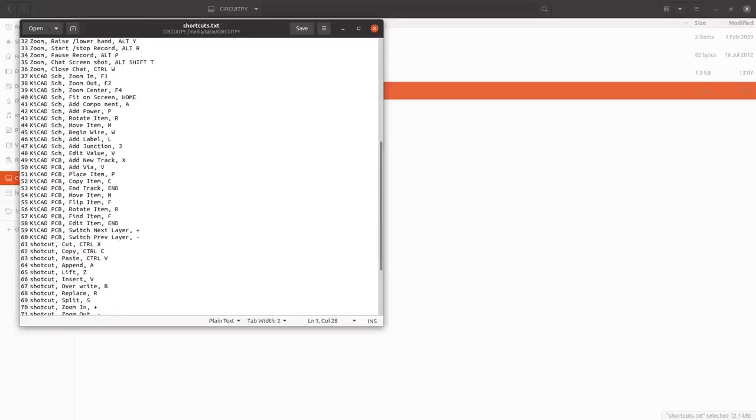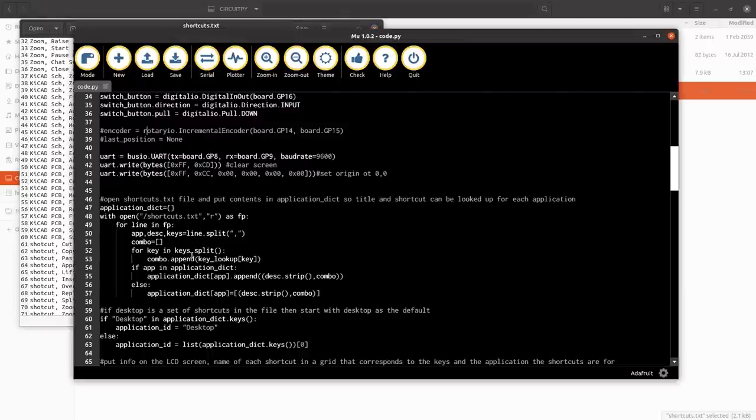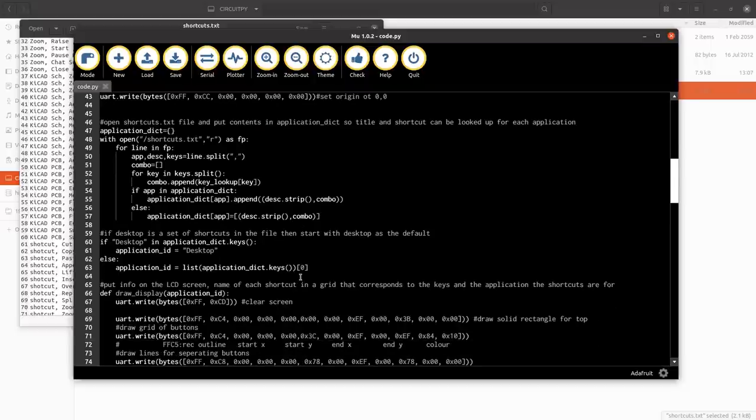These are probably Ubuntu specific, but it's really easy to change for whatever system you're using and whatever programs you use. So it goes through and sets up all the lines from that file into that dictionary so it can look it up. And if desktop is listed as one, it will set it up as the default.